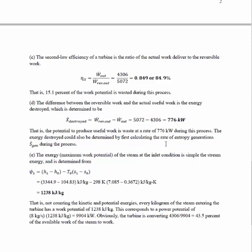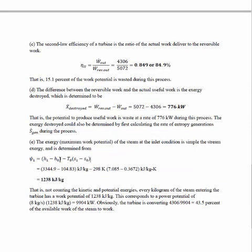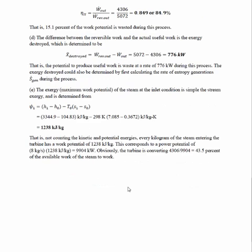So part E, the maximum work potential of the steam at the inlet is just the simple stream exergy. So if you look at this, this is the stream exergy equation on a per mass basis. So we know all these values, we can just go ahead and solve for those. That gives us 1,238 kilojoules per kilogram of work potential for every kilogram of steam that flows through this turbine. So we're neglecting kinetic potential energy, but that's what we're doing. We don't have any kinetic or potential energy terms here, so those are gone. So not counting kinetic and potential energy, every kilogram of steam entering the turbine has a work potential of 1,238 kilojoules per kilogram.